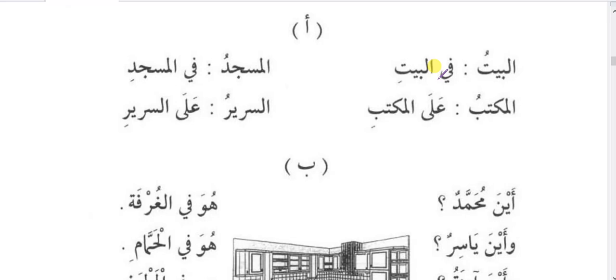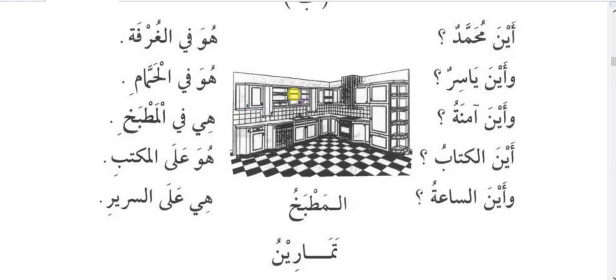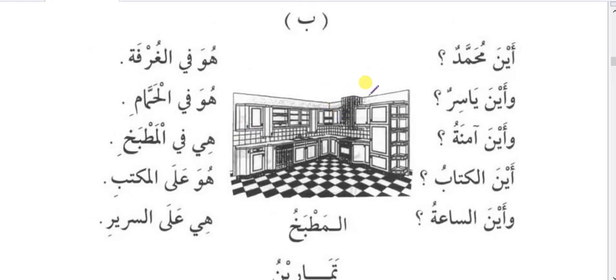Examples: al-baytu — the house; fil-bayti — in the house. Al-masjidu — the masjid; fil-masjidi — in the masjid. Al-maktabu — the table; alal-maktabi — on the table. Al-sariru — the bed; alas-sariri — on the bed.